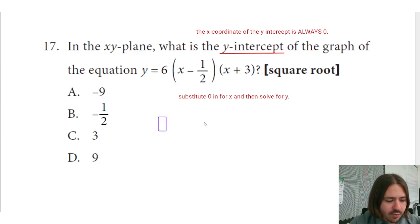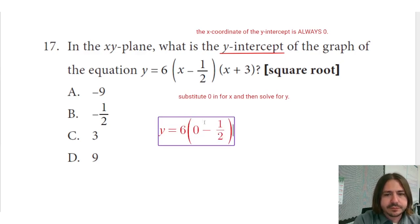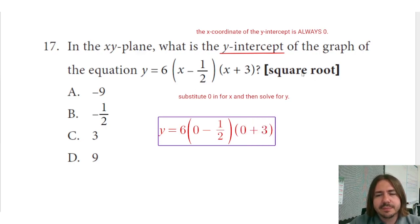So here we've got y equals 6 times (0 minus 1/2) times (0 plus 3). And this says you get the square root calculator. So I believe this means you get a scientific calculator.